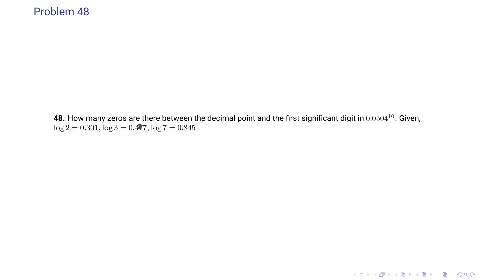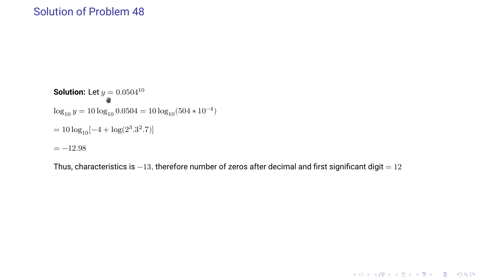Problem 48 asks: how many zeros are there between the decimal point and the first significant digit in (0.0504)^10, given log 2, log 3, and log 7? We let y equal the given number, take its log, and find log y equals minus 12.98. The characteristic is minus 13, so the number of zeros after the decimal point before the first significant digit is 12. For fractional numbers, |characteristic| minus 1 gives the zero count.